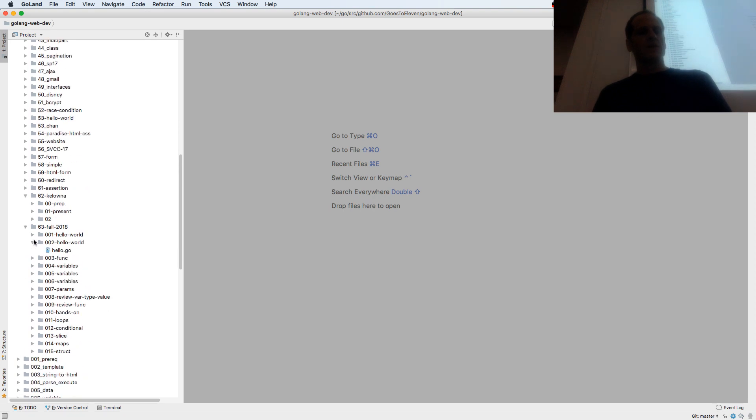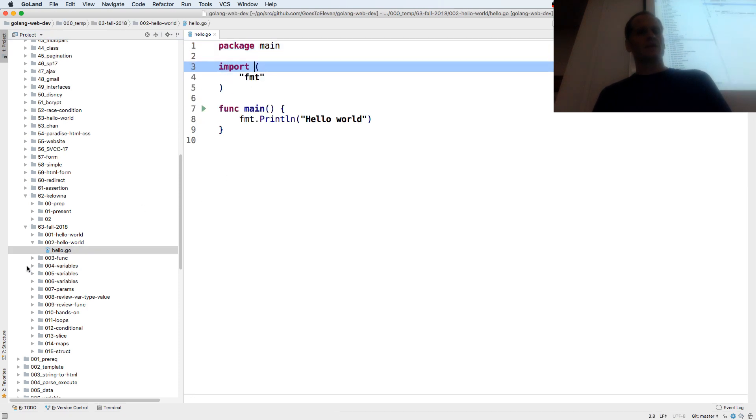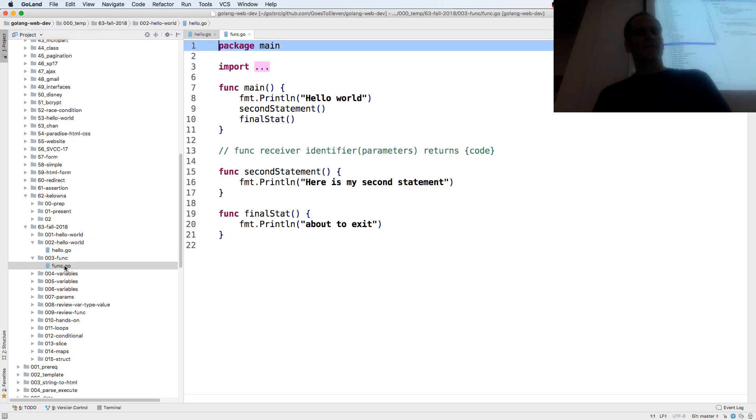So we did a little hello worlds. Right, and my imports are just hidden right there. If you ever see those dots, just click them. And then we have the func, and so we can create a function. It's going to be func, receiver, identifier, parameters, returns, curly braces surrounding code. So we create a function with the func keyword, identifier, no parameters, and then we call it and it executes it and it runs whatever code's in that function.